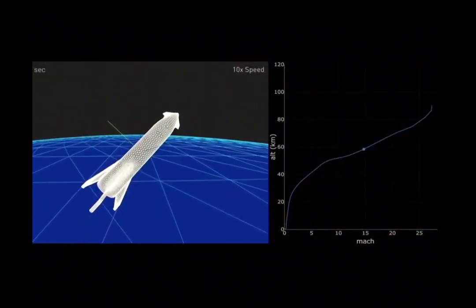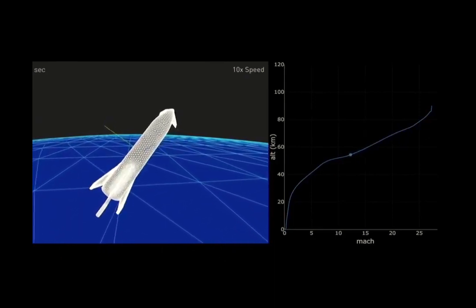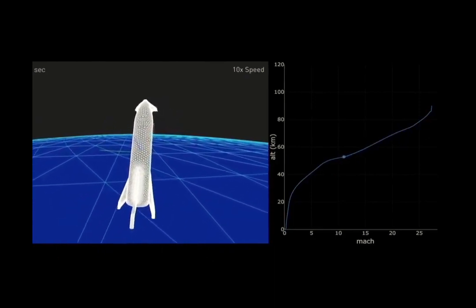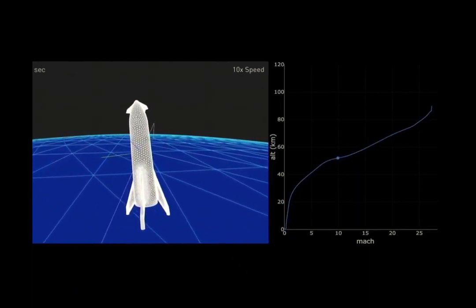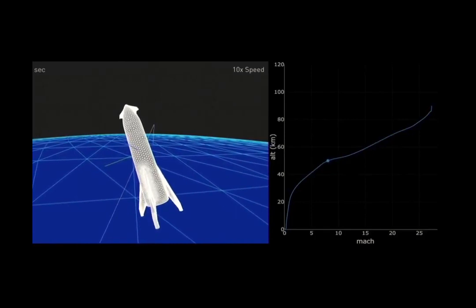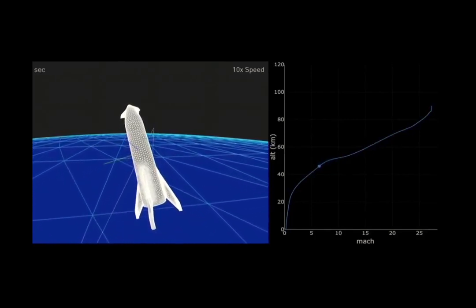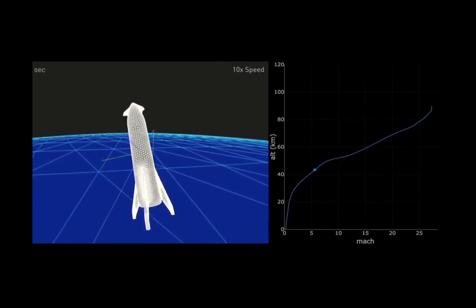So you can see it's basically coming in—if this is the Earth, if this stage is the Earth—it's coming in like that, and it's just using its entire body to brake. It sort of goes like that and slows down, and then it falls like a skydiver. Then it rights itself, fires the engine, and lands on the fins.